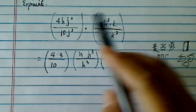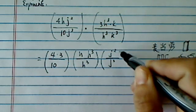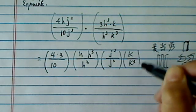That looks pretty good, and then I have a J squared, and J to the third, and then I have a K, and then K to the third on the bottom.